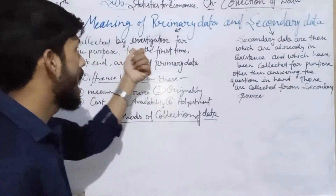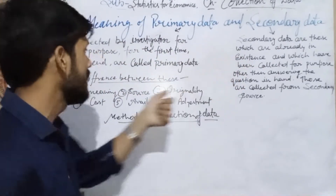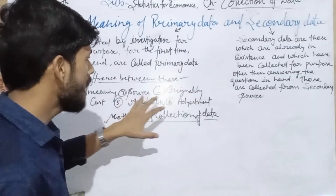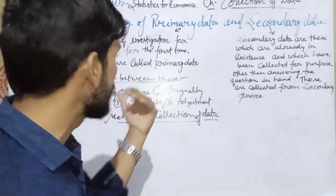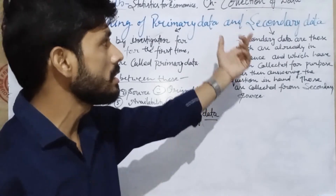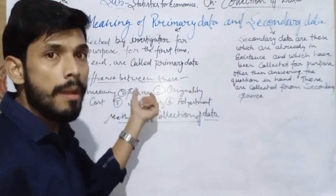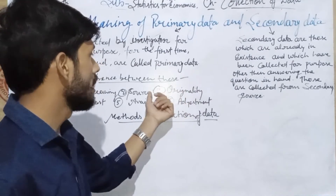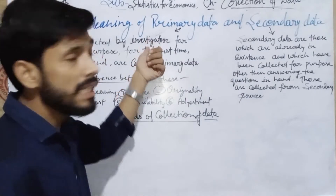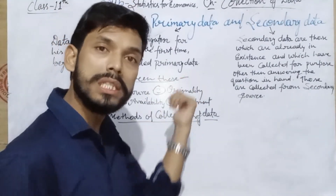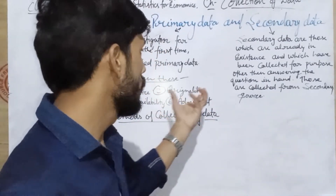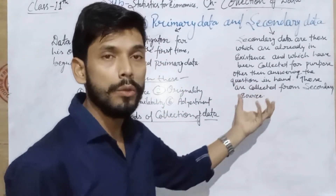Now, what is the difference between primary data and secondary data? First, meaning — we can write the meanings of both. Then, source: primary data is collected from the primary source, and secondary data is collected from the secondary source, meaning the place of origin of data. Regarding originality, primary data is most original and reliable, but secondary data has no such originality available.